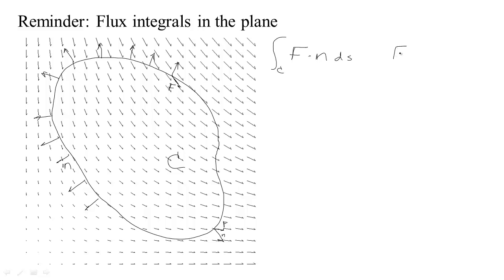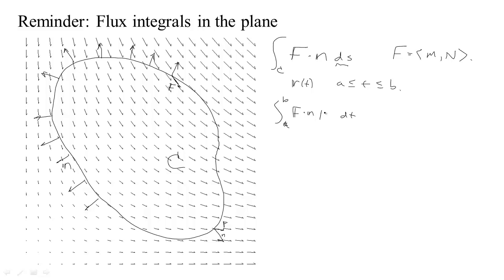To actually compute that, we have our vector field with components m and n and our parameterization — position as a function of time t between some starting and ending time, which draws our loop C. To do this integral we calculate the unit normal and do F·n. For a little bit of arc length, we integrate from A to B. To calculate arc length we take dt times the speed, the length of R prime — rate times time gives distance — so this is our little ds.